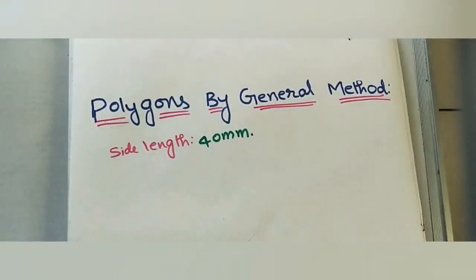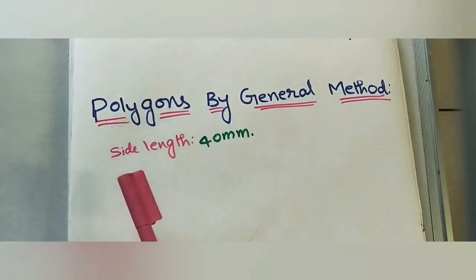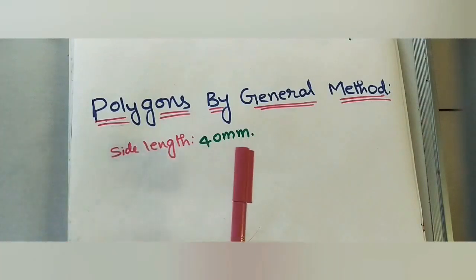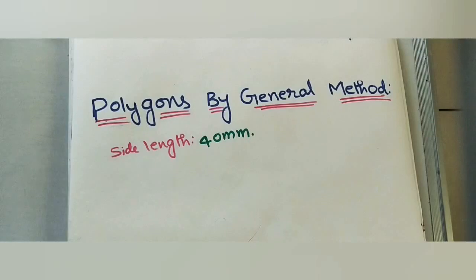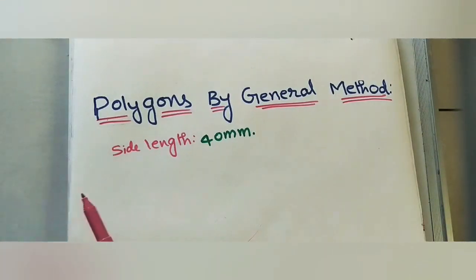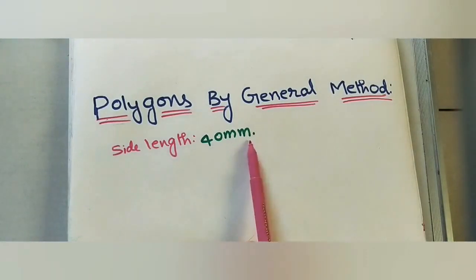Let us discuss how to draw polygons using the general method. A polygon with four sides is a square, five sides is a pentagon, six sides is a hexagon, and so on. In engineering drawing, we use regular polygons, where all sides have equal length and all corner angles are equal. To build a regular polygon, we first need to take a side length — here I am taking four centimeters or 40 mm.